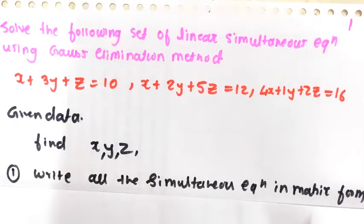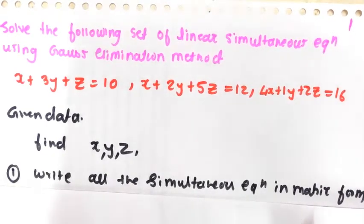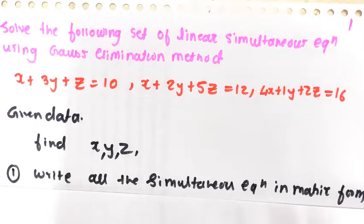The equations are: x + 3y + z = 10, x + 2y + 5z = 12, and 4x + y + 2z = 16. This numerical is very important and is asked many times in university exams. You have to find out the values of x, y, and z.